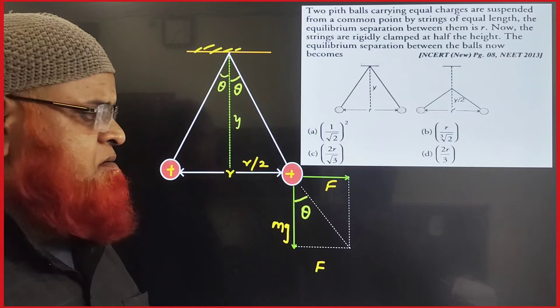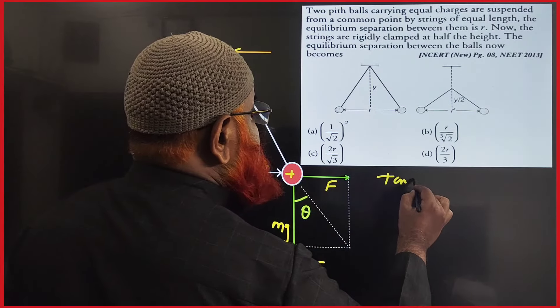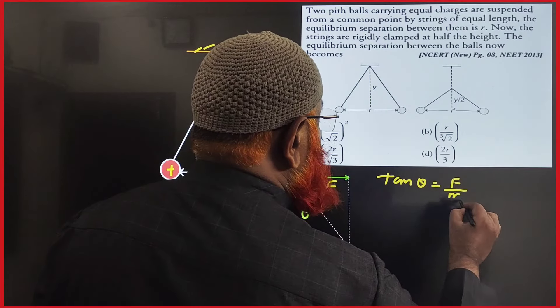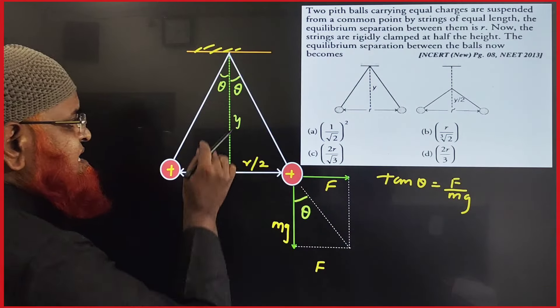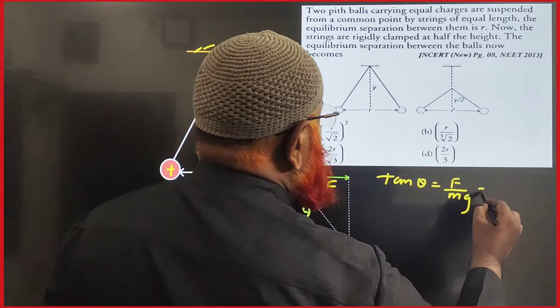Now what I am going to do here, I will write tan θ is equal to F by mg, and I will take tan θ from this side because both angles are same. Tan θ is equal to